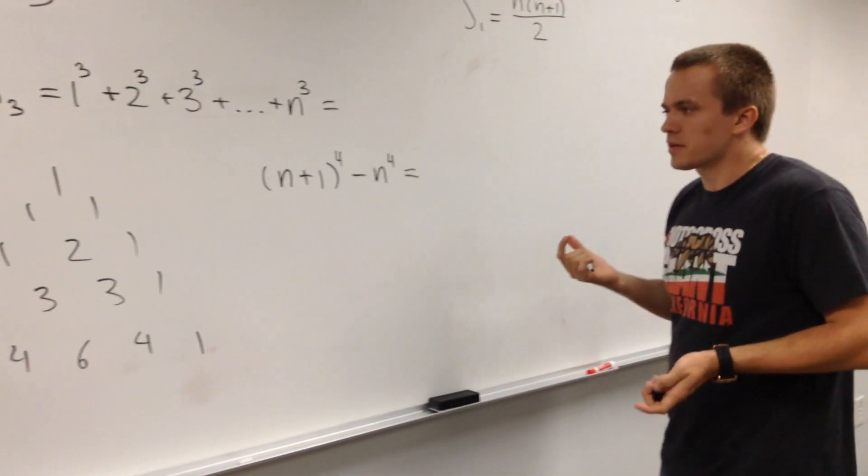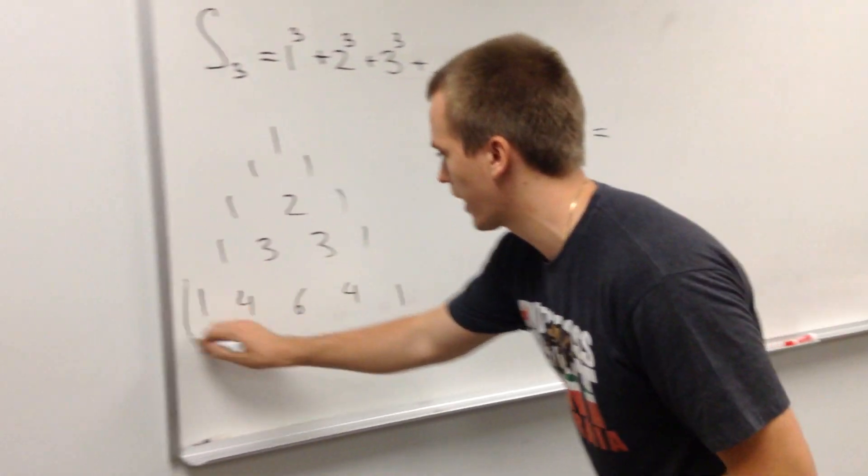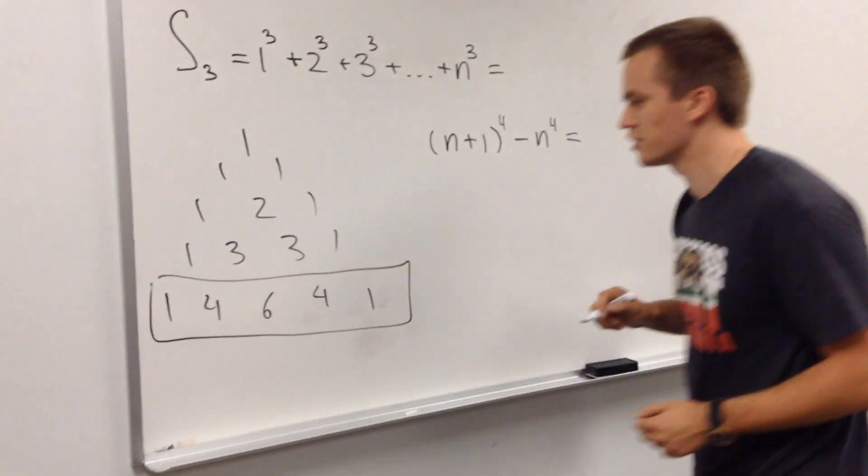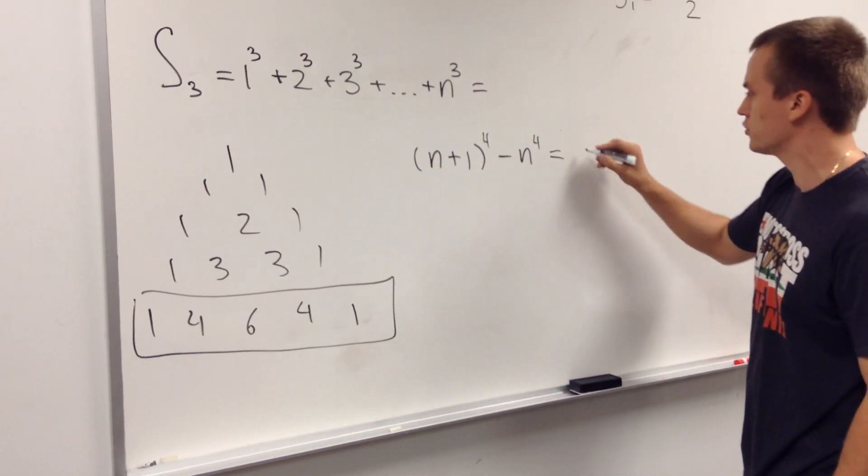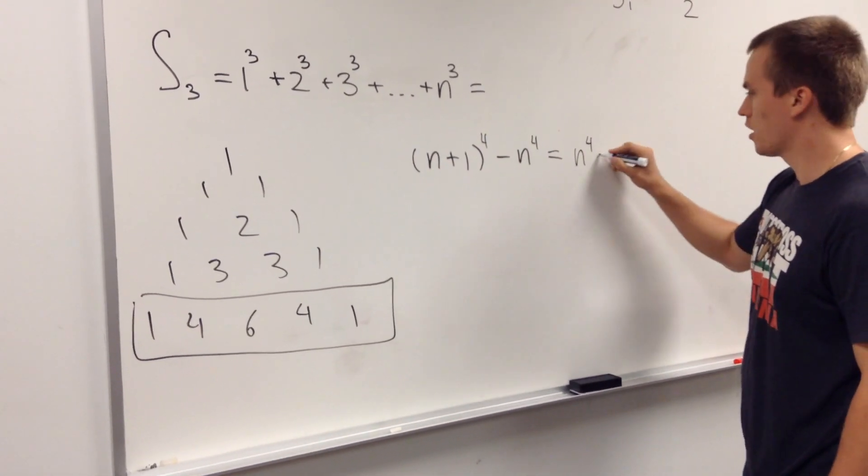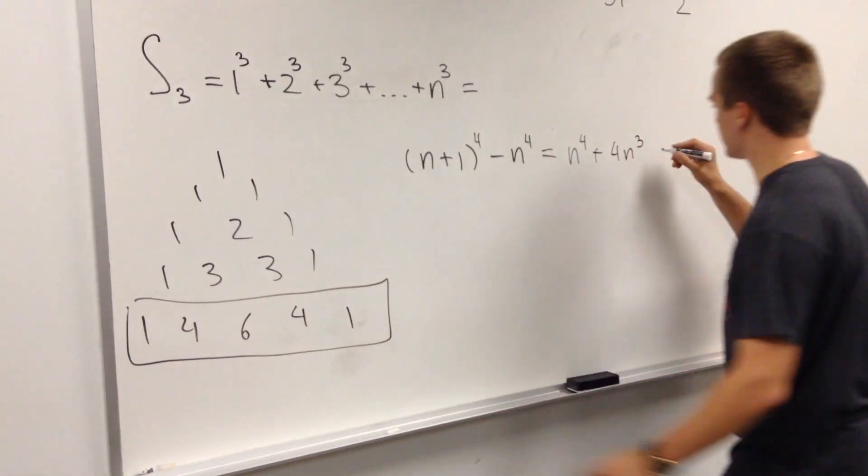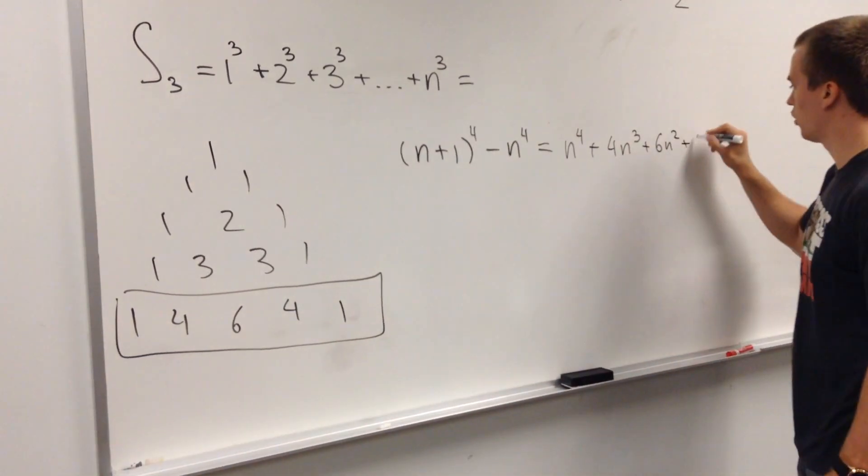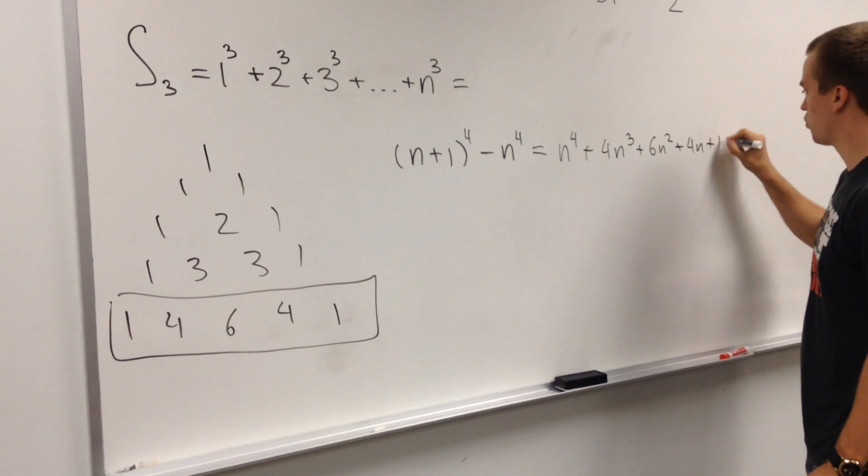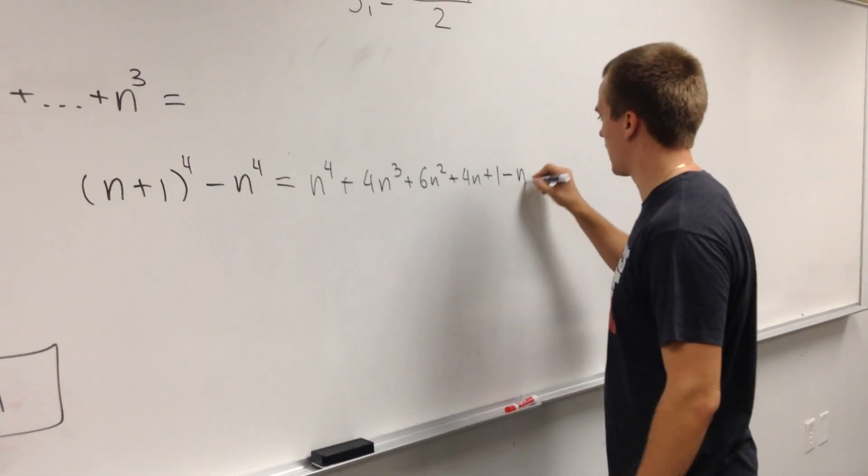And you might ask, like yourself, what is this equal to? And we can use like this triangle to get our coefficients. So this sum, this term is actually equal to n to the fourth plus 4 n cube plus 6 n square plus 4 n plus 1. And the last term is minus n to the fourth.